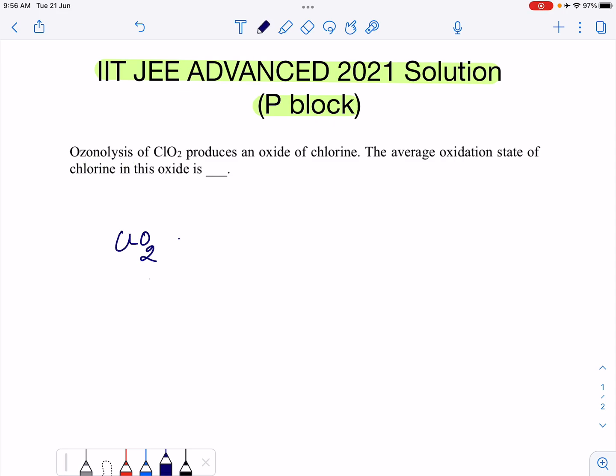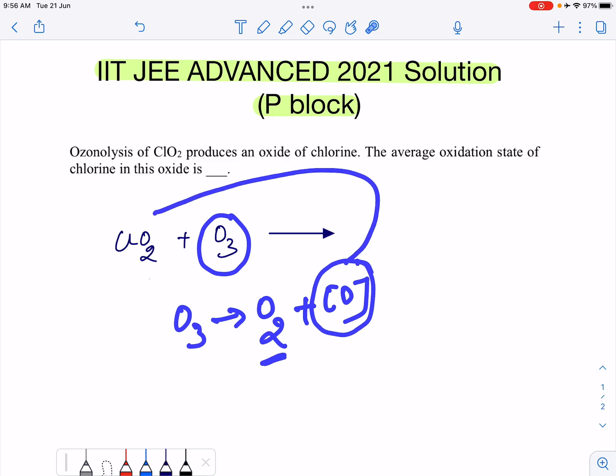In the given question, ClO2 reacts with ozone to break down into some oxide and we need to find out the oxidation number. We all know this ozone decomposes into dioxygen molecule and nascent oxygen. This nascent oxygen is responsible for oxidation of the ClO2. ClO2 in presence of this nascent oxygen has a tendency to get oxidized and form ClO3 and O2.